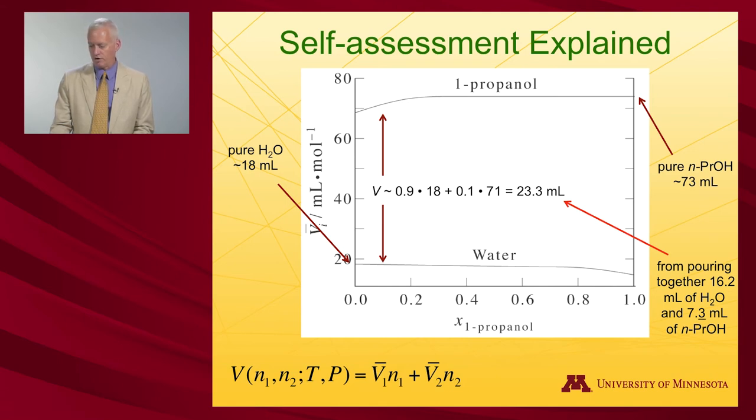And where did I get this 7.3 from? It's by taking 73 milliliters as the volume of the pure substance. So 0.1 moles of the pure substance would be a tenth of that, 7.3.